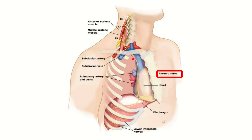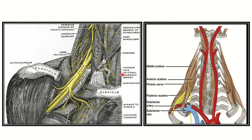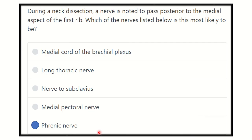The phrenic nerve passes posterior to the medial aspect of the first rib. In another picture, we can see the phrenic nerve traveling in front of the anterior scalene muscle, turning medially and then going downward behind the first rib. After arising and entering the posterior triangle, it turns medially in front of the anterior scalene muscle and finally passes behind the first rib.